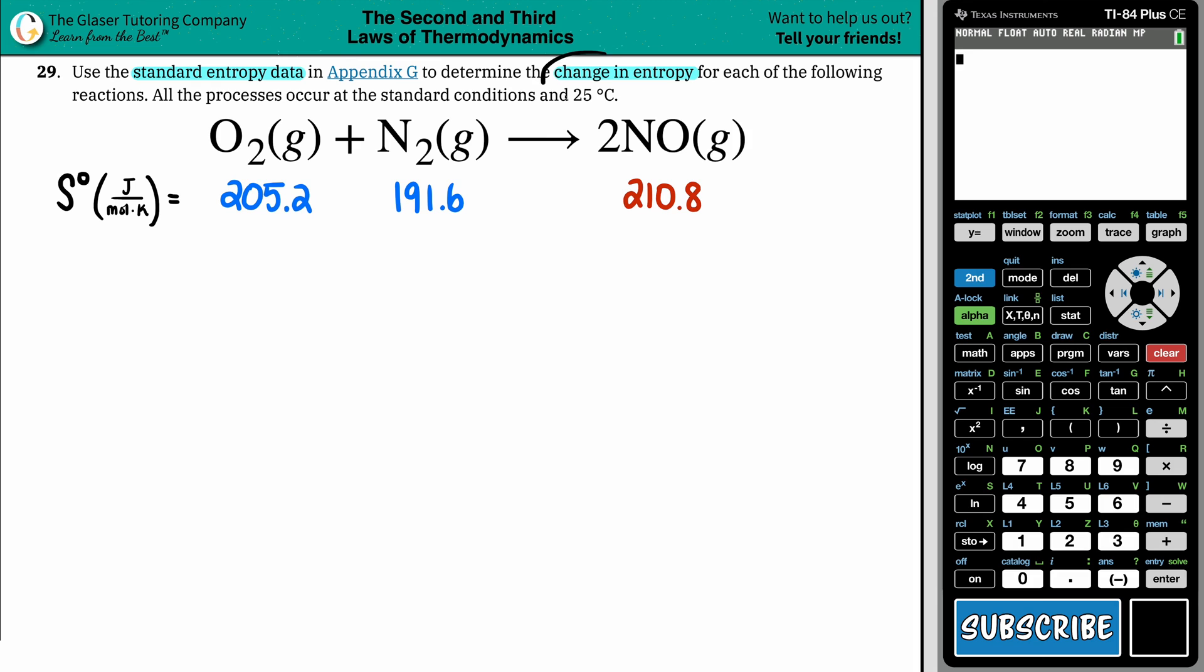We have O2 gas plus N2 gas which will yield 2 NO gas. Now in this case we want to find that change in entropy. Change in entropy, remember change is that delta sign, that triangle. And entropy is always an S value. So we're looking for a delta S. Now we want to use those standard values in the back of a textbook. In this case it's Appendix G or whatever the table is in the back of your textbook. If we're using standard values that means that we're solving for a delta S notch. The notch or that degree sign up at the top just means that you're using standard values in the back of the book.